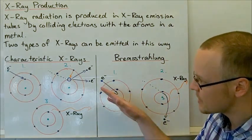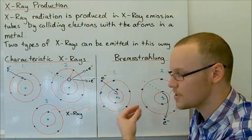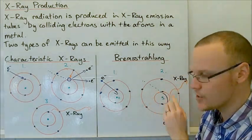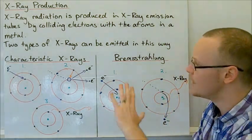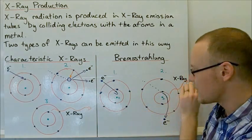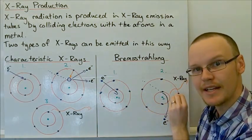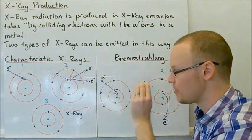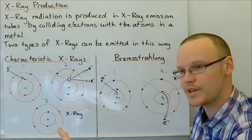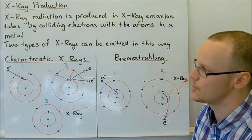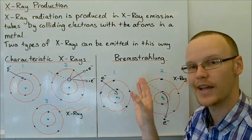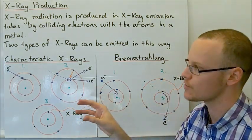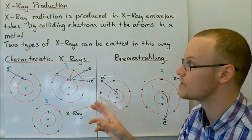Depending on how close the electron passes and how much it's slowed down by the nucleus, that will change the energy that the X-ray will have. If it's not slowed down very much, a very low energy X-ray is emitted. If the electron is completely stopped at the absolute other extreme, the X-ray will have very high energy. So there are two very different ways X-rays can be produced when firing electrons at very high velocity towards a metal.